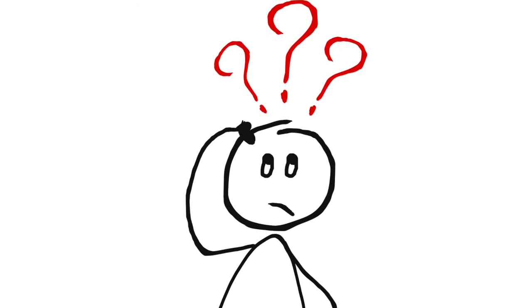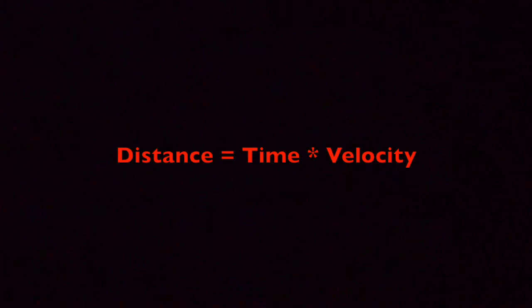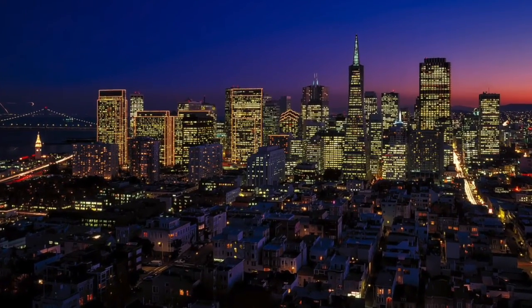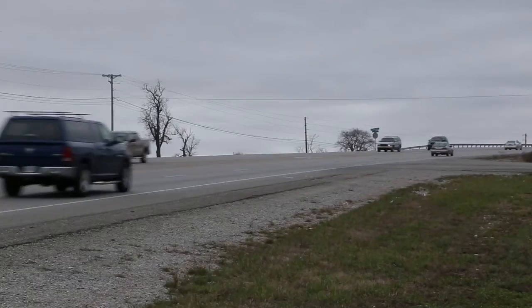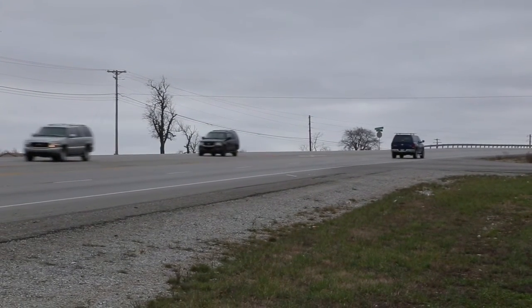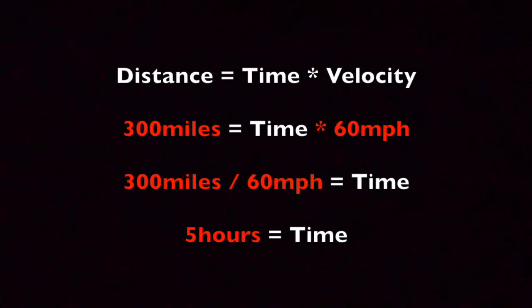Does this mean that the experiment is wrong? To answer this question, we have to look at a very important equation. Distance equals time times velocity. This is the distance-based equation and we use it all the time. For example, if you live 300 miles from San Francisco, how long will it take you to drive there if you travel at 60 miles per hour? You quickly apply the distance equation to arrive at 5 hours as the answer.